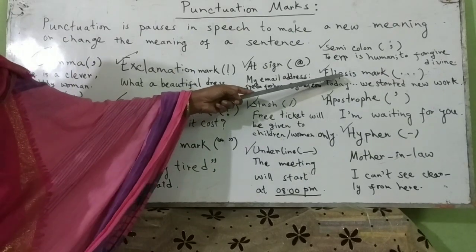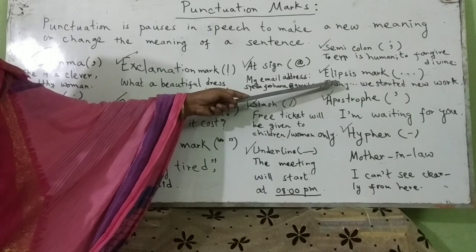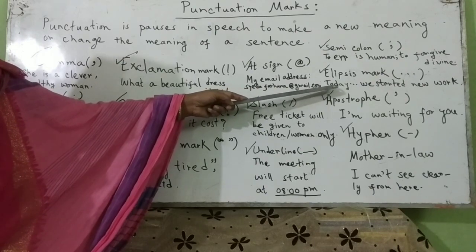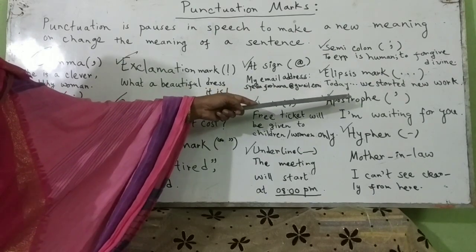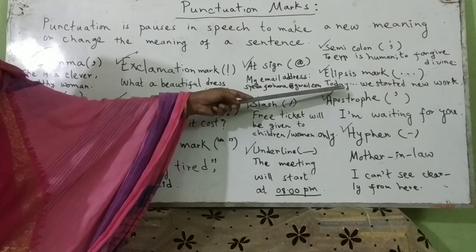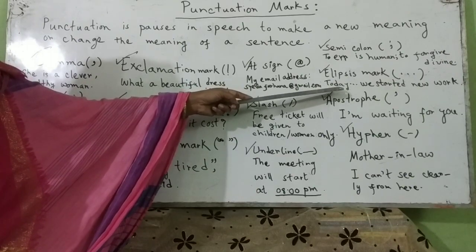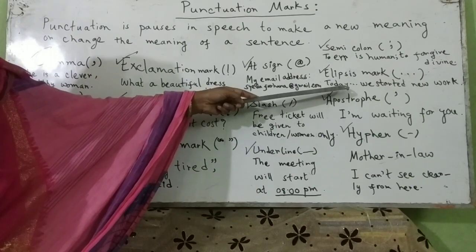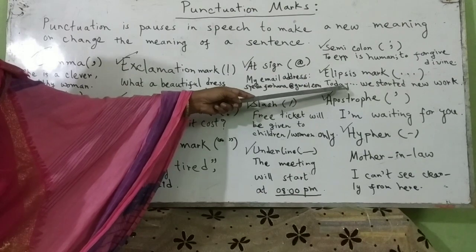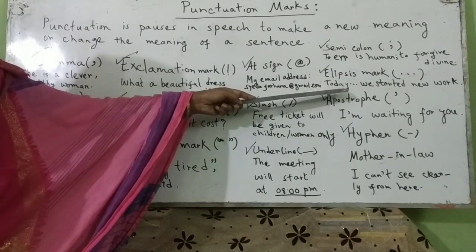This is an ellipsis mark. It consists of three dots. We use it when we start new work or omit something. If you see an ellipsis mark, you can understand that the information that follows is less important or less relevant.